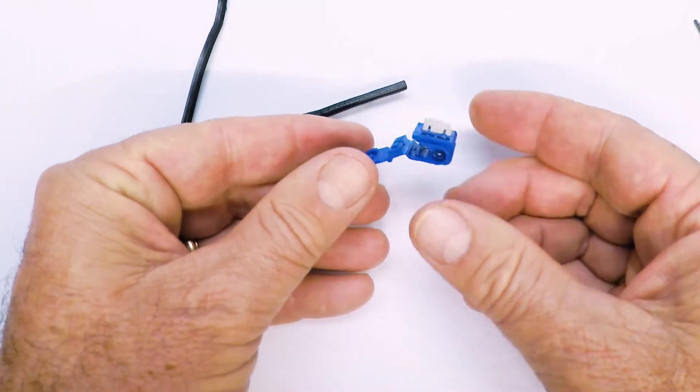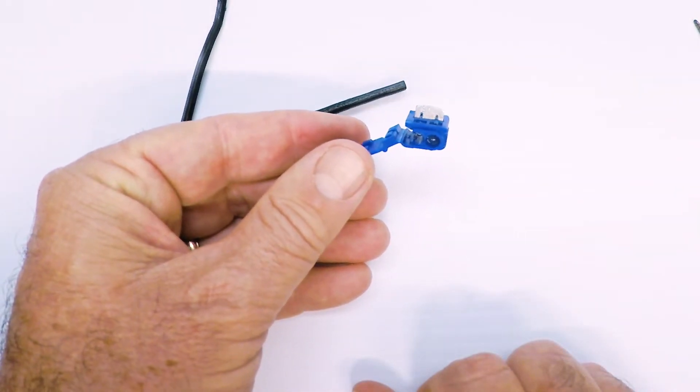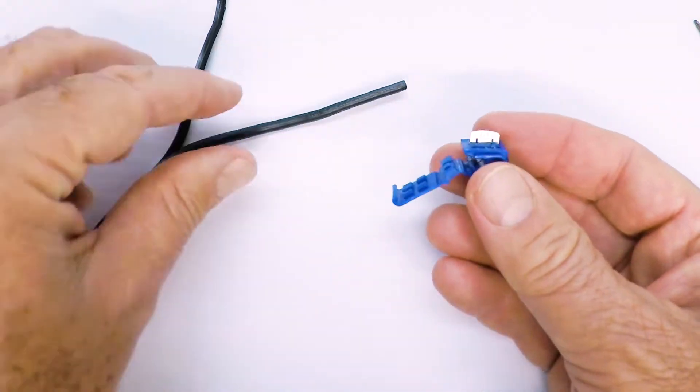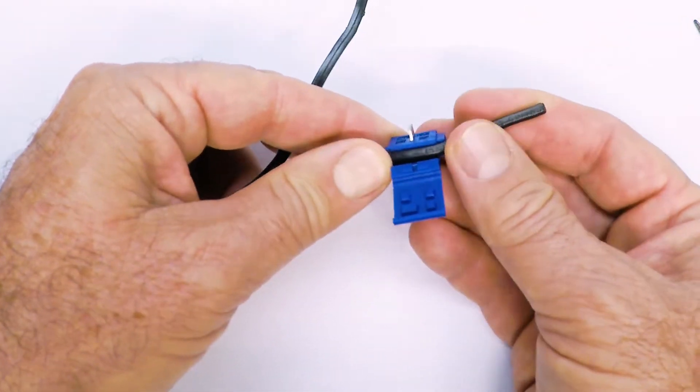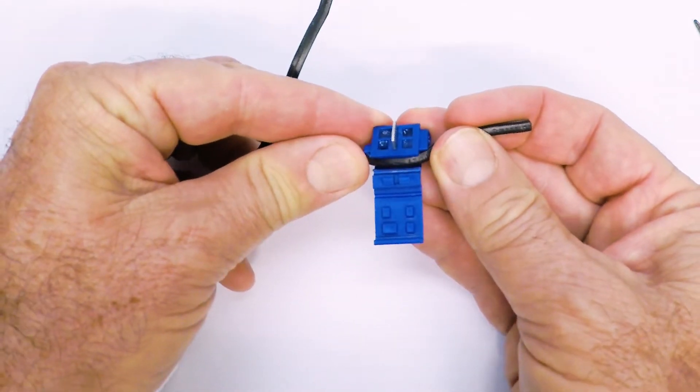This little plate either has to be removed or pulled back like it's shown here in order to get the wire inside the connector. It's really important.